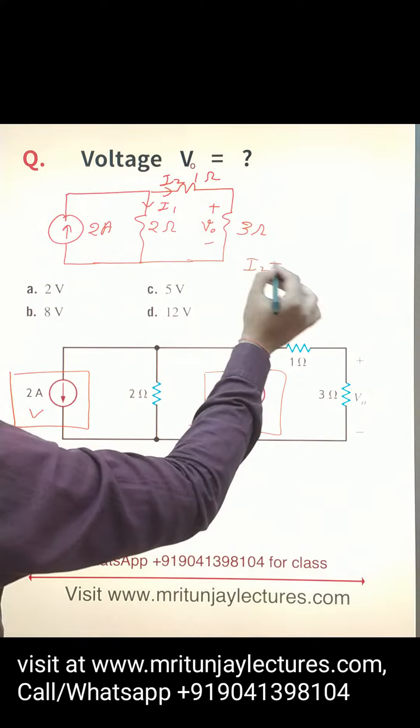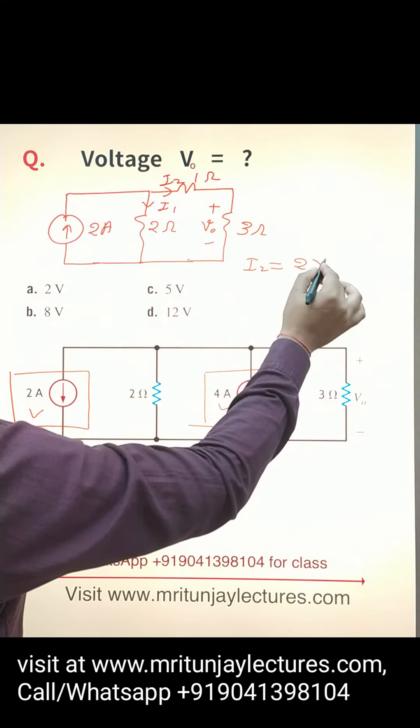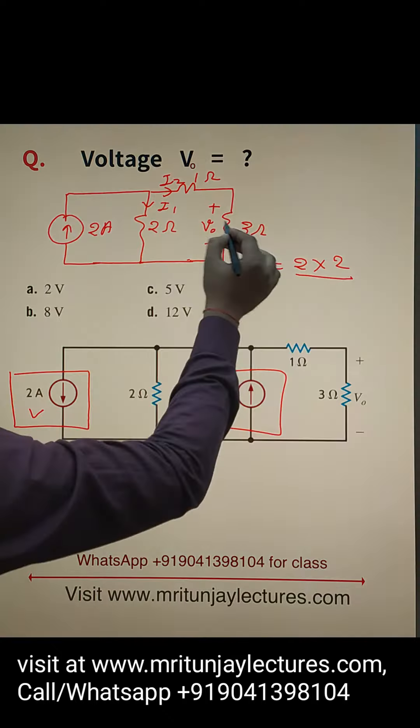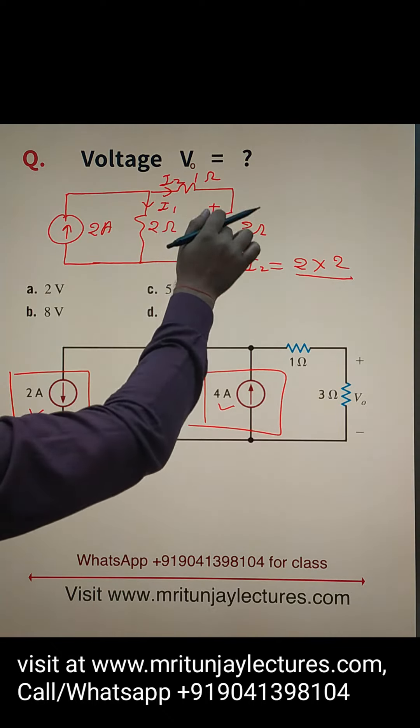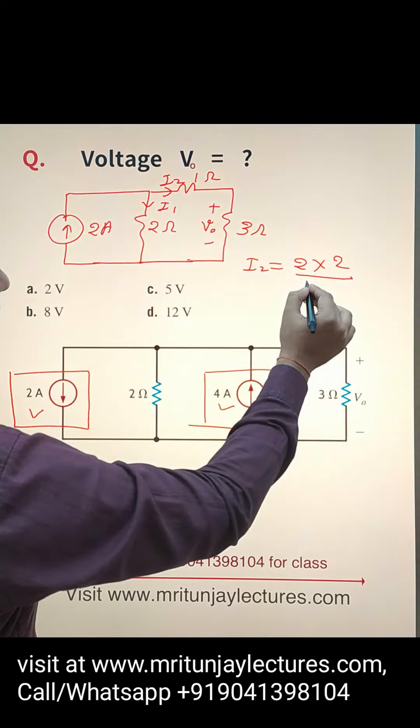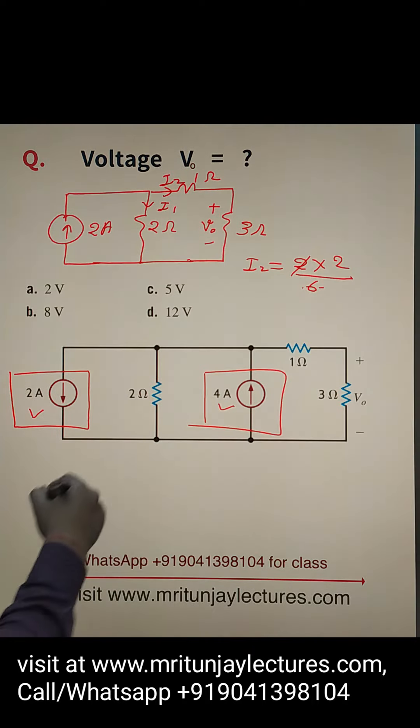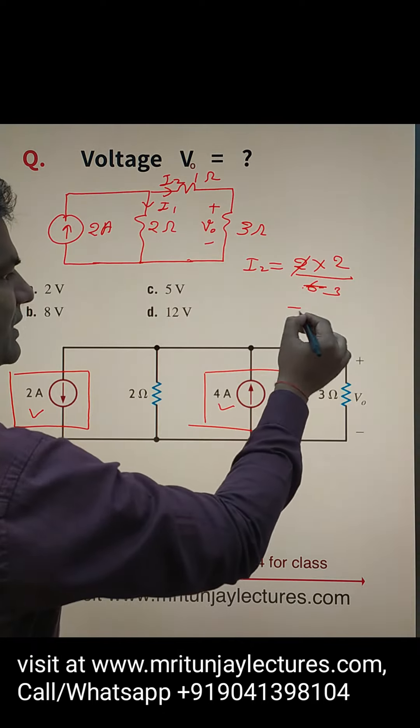What about i2? i2 is basically 2 into 2 divided by total resistance in this branch: 3 plus 1 equals 4, 4 plus 2 equals 6. So 2 times 2 divided by 6, that is 2/3 ampere.